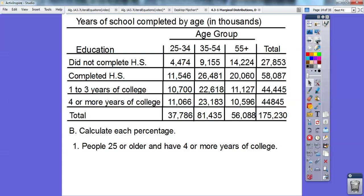Alright, so the first one I want to calculate, the people that are 25 or older, so all the way across of the 25 or older, all the way up to 55 and plus, who have four more years of college. Okay, so let's go ahead.